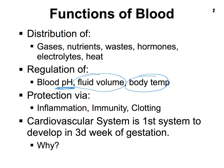Our blood plays a very important role in inflammation, and many of our white blood cells are involved in the inflammatory process. Within the white blood cells, we also have a class called lymphocytes, which play an important role in immunity. Finally, our blood contains clotting factors — proteins responsible for allowing our blood to clot and seal off wounds.